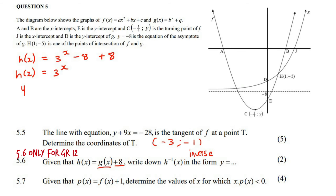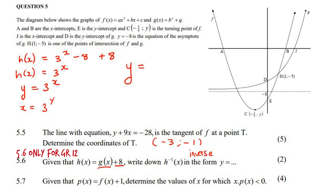To find the inverse, step one: write it as y equals 3 to the power x. Step two: switch x and y around. Step three: get y by itself again — here you'll need logs. The inverse of an exponential becomes a log graph. We end up with y equals log base 3 of x. That's the answer.